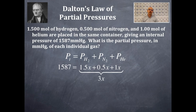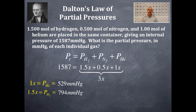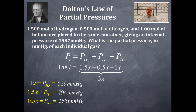I'm going to sum these all up — that equals 3x. So 1,587 divided by 3 equals x, meaning 1x equals 529 millimeters of mercury, which is the partial pressure of helium. Then I multiply x by 1.5 to get the partial pressure of hydrogen gas: 794 millimeters of mercury. Then I multiply 529 by 0.5 to get the partial pressure of nitrogen gas: 265 millimeters of mercury.